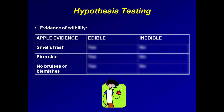Let's look at some simple hypothesis testing examples. You're at a grocery store examining an apple, trying to decide whether it's edible or not. It smells fresh, has a firm skin, and has no bruises or blemishes. We can represent this evidence of edibility in a matrix. Note that we don't have any evidence to suggest the apple is inedible.